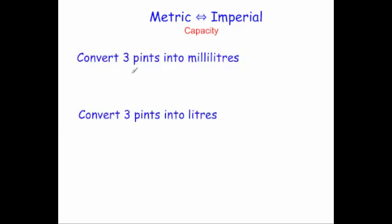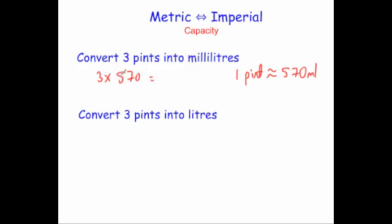The first example says convert three pints into milliliters. One pint is approximately equal to 570 milliliters, so to find three pints you do 3 times 570. Three times 500 is 1500, and 3 times 70 is 210, giving 1710 milliliters, or equivalently 1.71 liters. But since it asks for milliliters, the answer is 1710 milliliters.